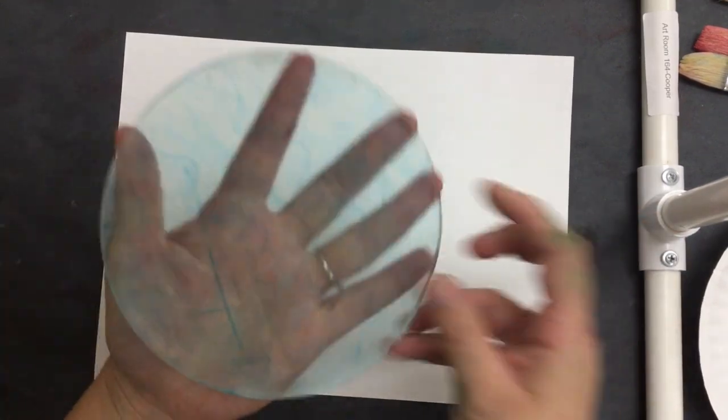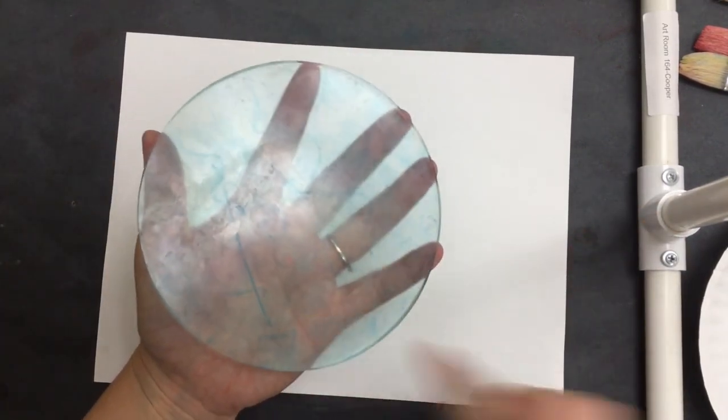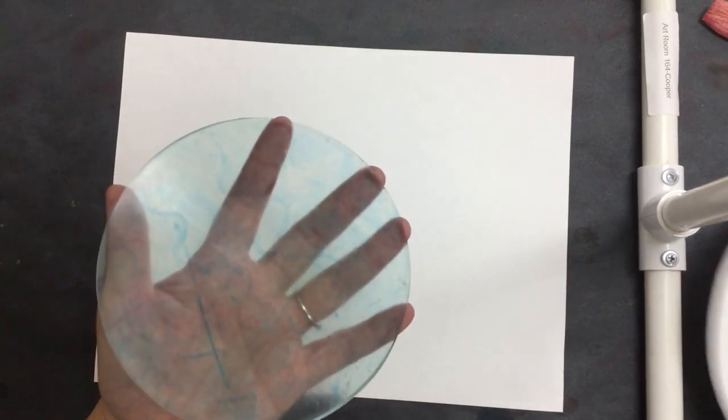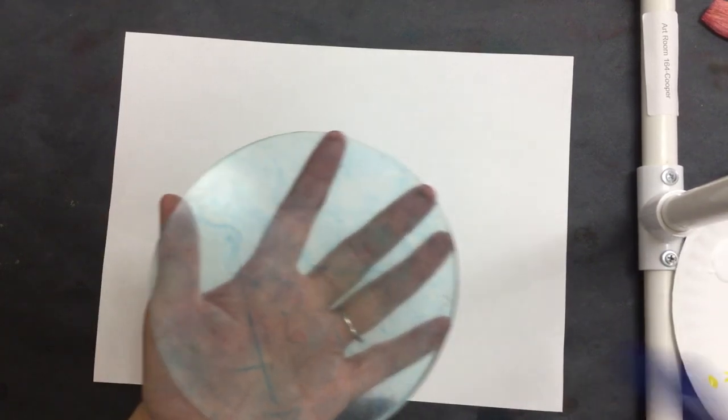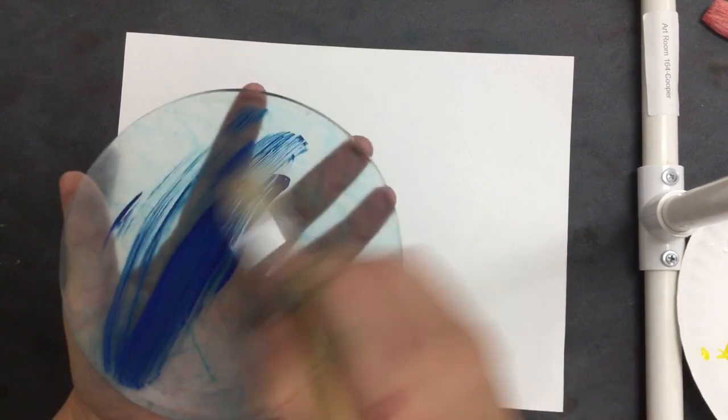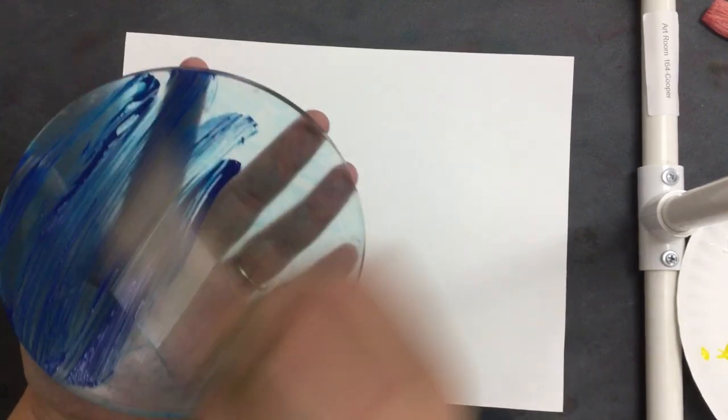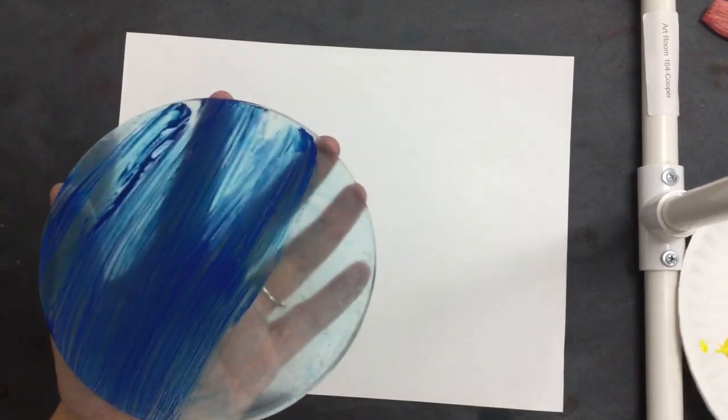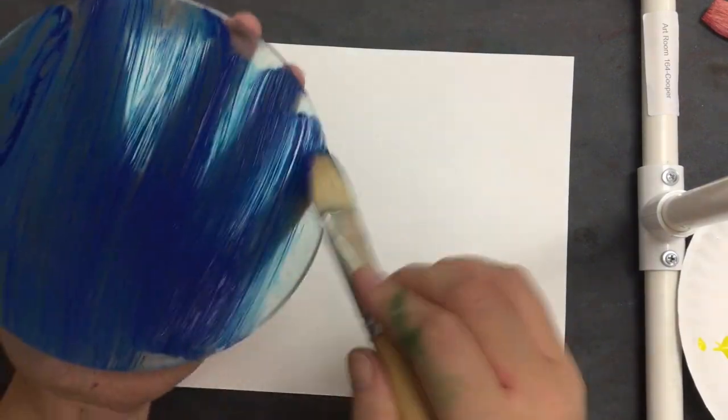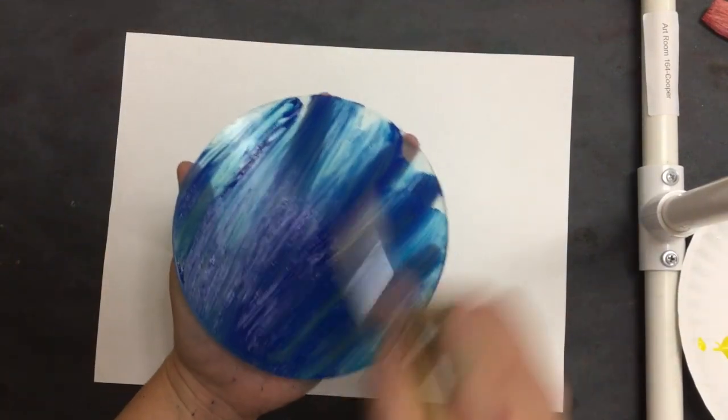What you do with this is on one side you'll paint your design, whatever designs you want to go with. It will leave a mono print when we're done, which means it's a one-time print, one of a kind, because it's only good for one time. I'm just going to paint some color onto my jelly plate.